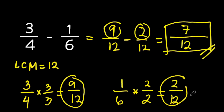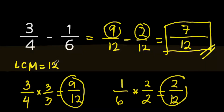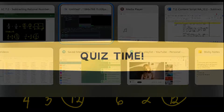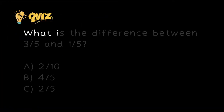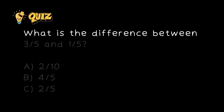Remember, finding a common denominator is the key to subtracting rational numbers when they have different denominators. Amazing progress, math wizards. It's time for a quiz. Here's the question: What is the difference between 3 over 5 and 1 over 5?